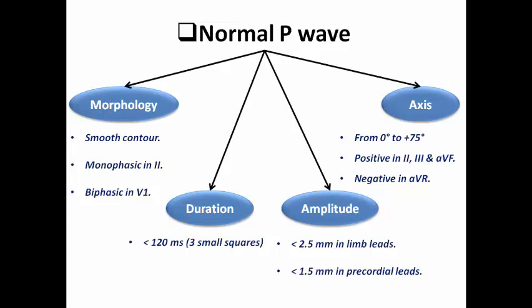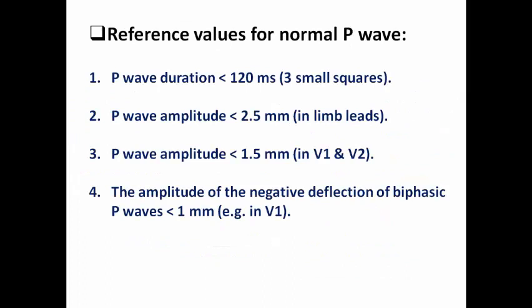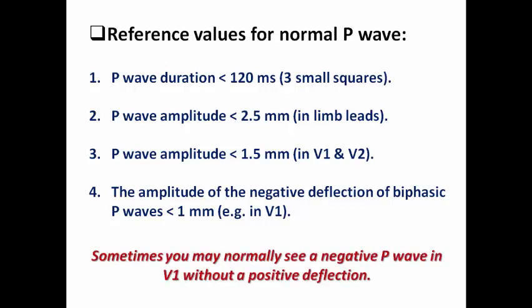These are the criteria of a normal P wave. Sometimes you may not see a positive deflection, and you can see an entirely negative P wave in V1 — that is a normal variant.